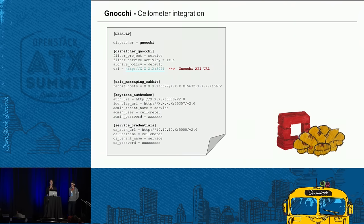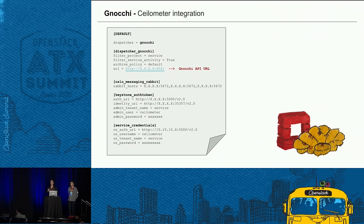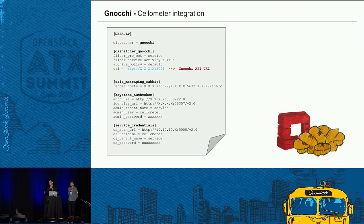The integration between Ceilometer and Gnocchi is quite simple. You add a new dispatcher — the Gnocchi dispatcher — into the default section of your Ceilometer configuration file. Then add a new dispatcher_gnocchi section with the URL of your Gnocchi API. We are using a load balancer, so you put the load balancer URL. You also configure oslo.messaging.rabbit with your RabbitMQ cluster addresses, the Keystone auth token, and service credentials, just like other OpenStack services.